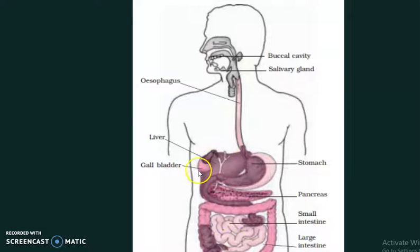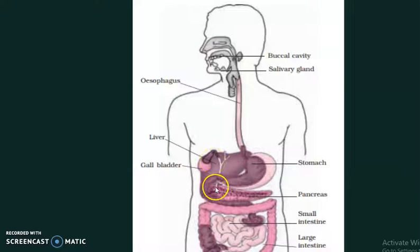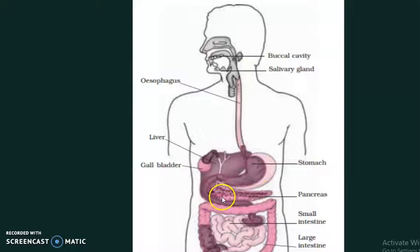The gallbladder is associated with the liver — the largest gland. The gallbladder stores the juice produced by the liver. The pancreas is located between the large intestine and the stomach and also secretes juices that help in digestion of food material.